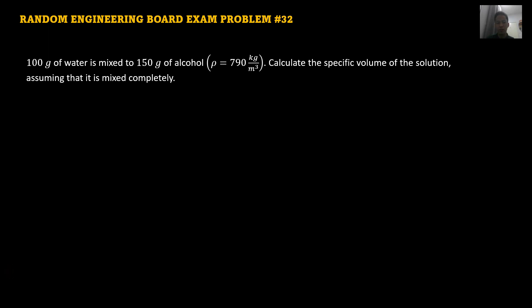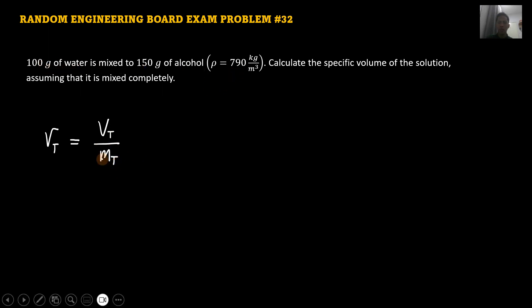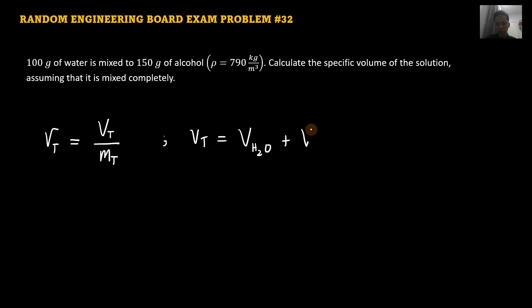Let's go back to the basic concepts. The specific volume of the mixture — the total combination of water and alcohol — gives us a total specific volume. When we say specific volume, this is just the total volume per total mass. We need to get the total volume of this mixture and the total mass, then divide the total volume by the mass of the mixture to get the specific volume. The total volume of the mixture equals the volume of the water plus the volume of the alcohol.